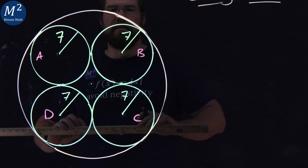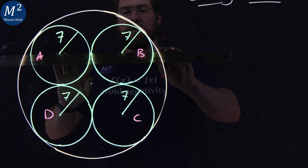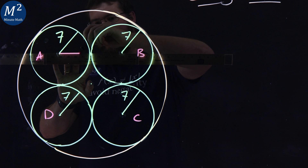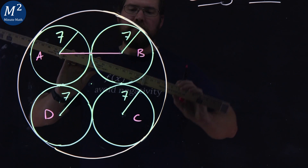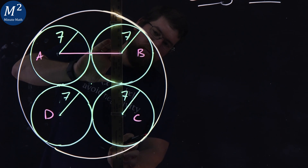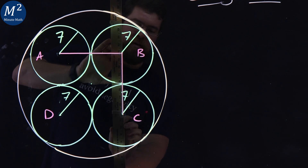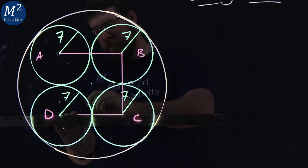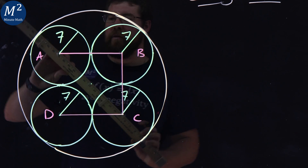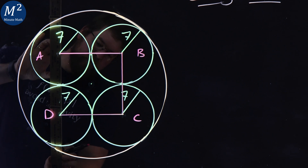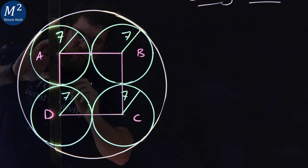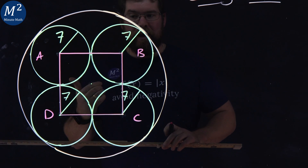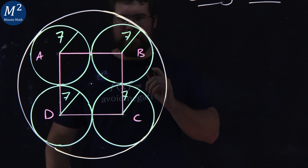Let's connect these circle centers. A to B, then B to C. What do you think happens after B to C? Well, C to D. A to B to C to D, back to A. All right, let's have some fun with this. We have A, B, C, D — we've made a little connection between them.